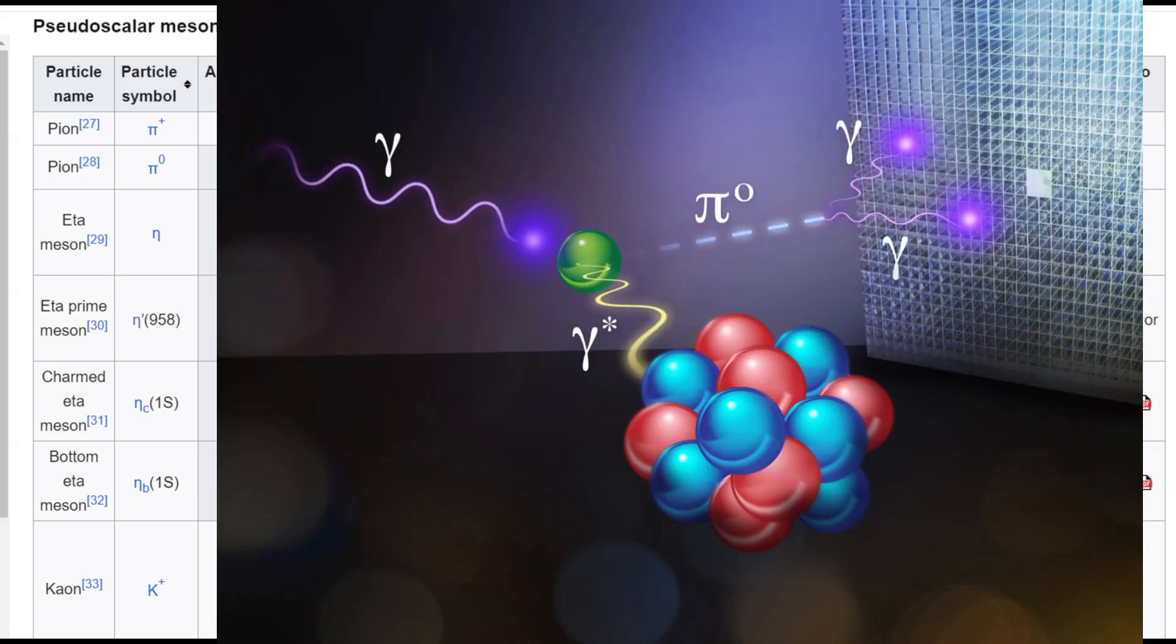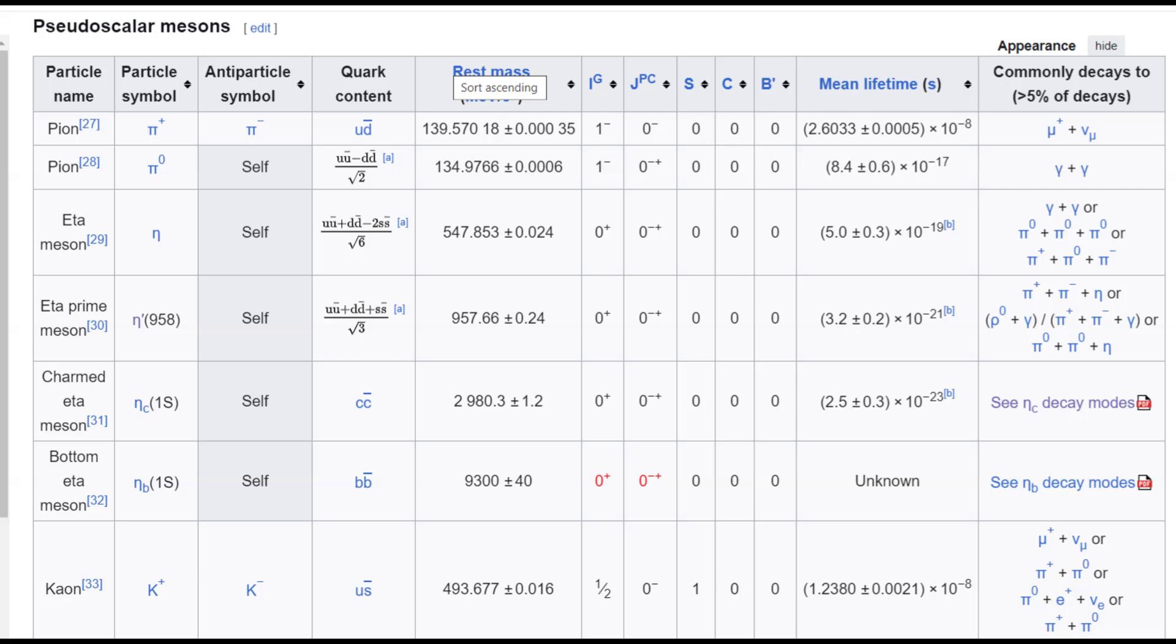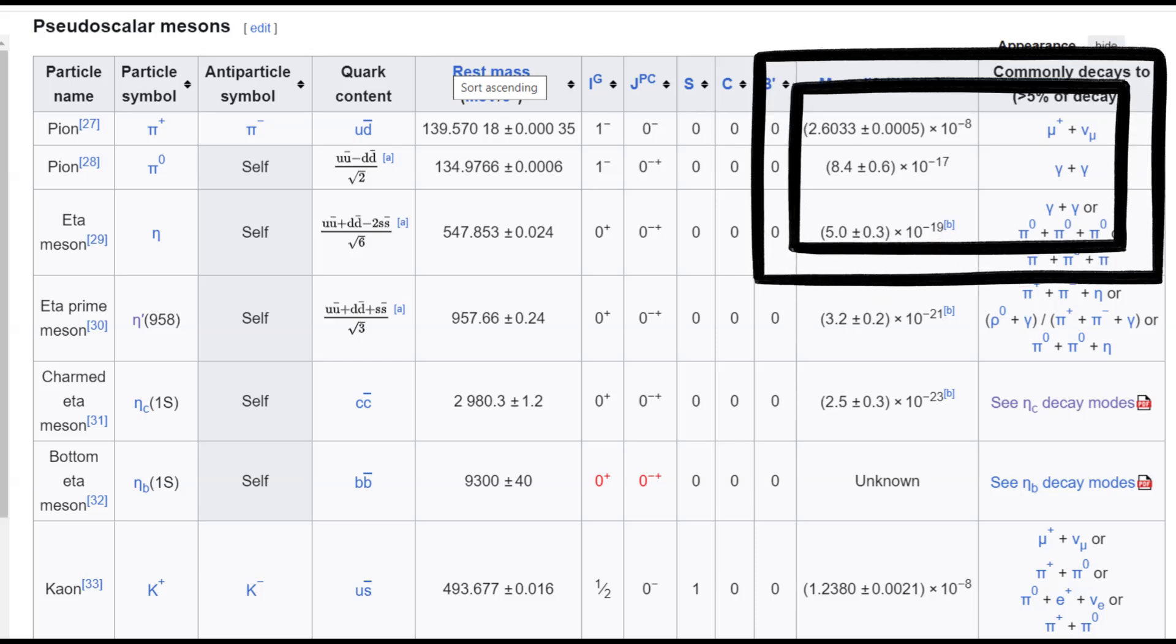Since they have a particle and an anti-particle, corresponding anti-particle, they will annihilate very fast and they are highly unstable. And as you can imagine, it decays into photons.